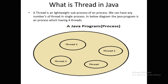So what is a thread? A thread is a lightweight sub-process of a process. We can create any number of threads in a single process. As you can see on the screen, we have a Java program where four threads are running. This Java program is a process which has four threads running — a thread is basically a sub-process which runs in a parent process.